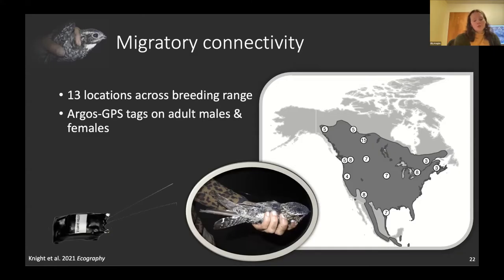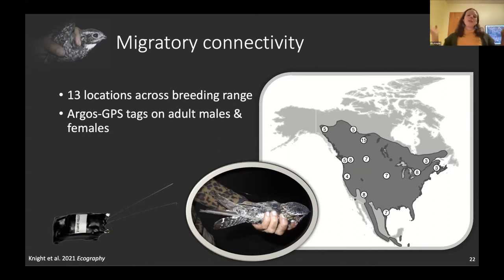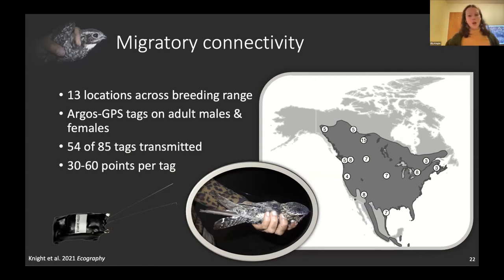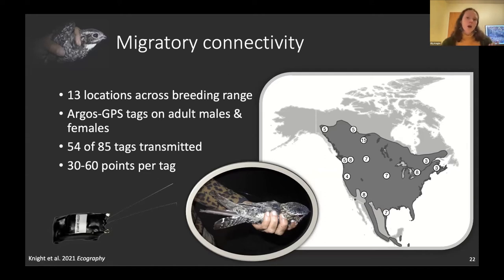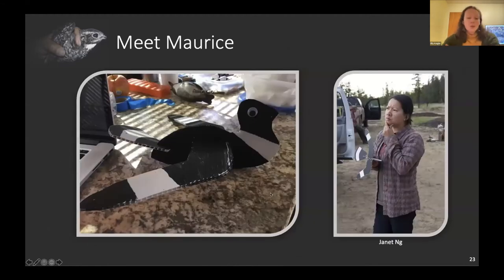Nighthawks are very hard to recapture, so Argos GPS tags were used. These tags take GPS points with about 10-meter location accuracy, then upload those points to the Argos satellite by essentially screaming at the sky. The trade-off is that satellite uploading is battery-intensive, so tags don't always work well — each bird might yield 30 to 60 locations, and some birds only provided one or two points. The number of tags deployed varied by location.